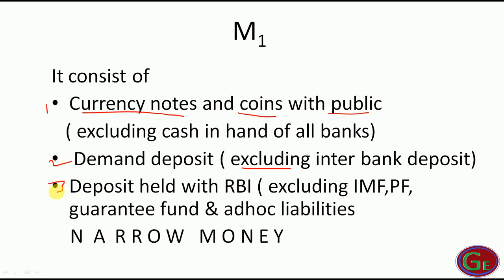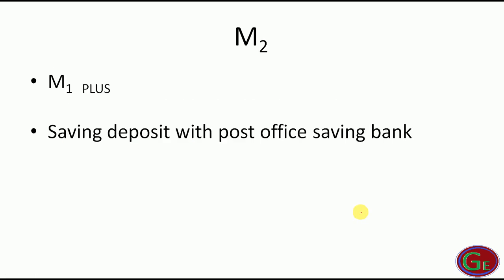M1 is also called narrow money. Its components are: currency notes and coins with the public, demand deposits excluding interbank deposits, and deposits held with the RBI.